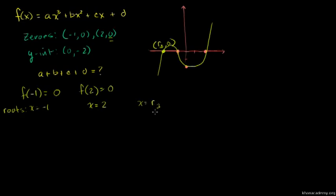f(x) is equal to a times (x + 1) times (x - 2) times (x - r₃). We're expanding this expression. We have (x + 1) times (x - 2) times a times (x - r₃). This gives us ax cubed.